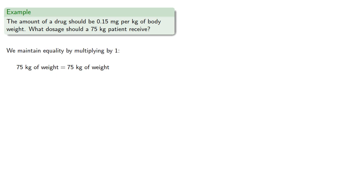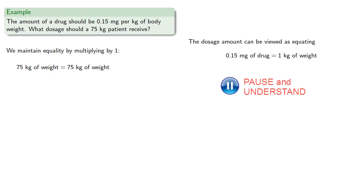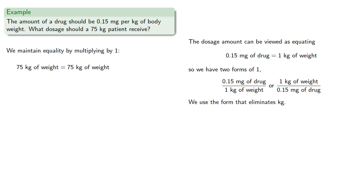We maintain equality by multiplying by 1. That dosage amount can be viewed as equating 0.15 mg of drug to be the same as 1 kg of weight. We have two forms of 1, and we'll use the form that eliminates kg, which would be the form with kg in the denominator.